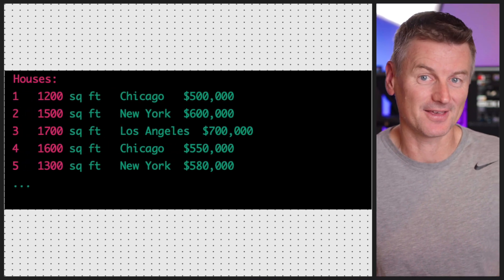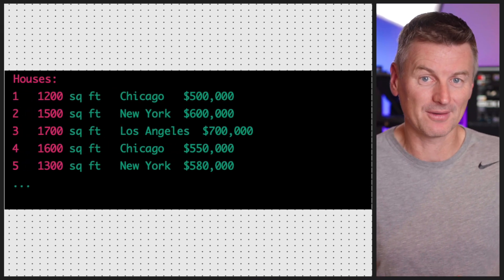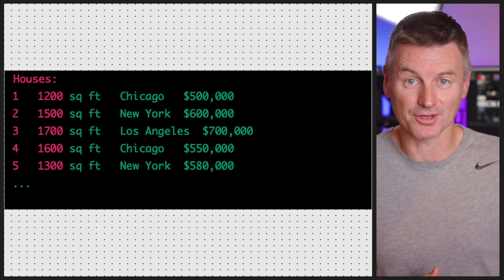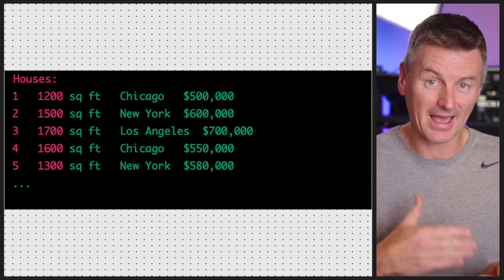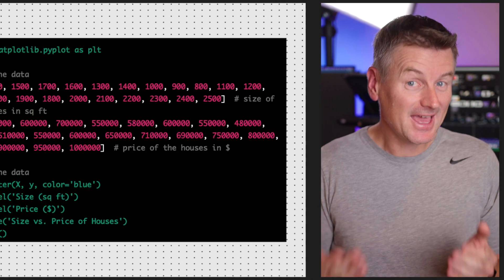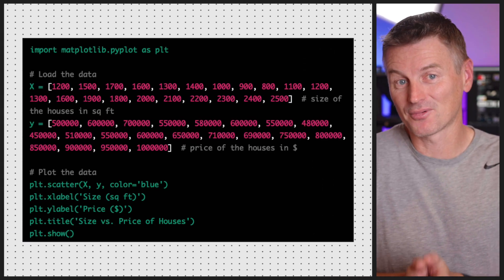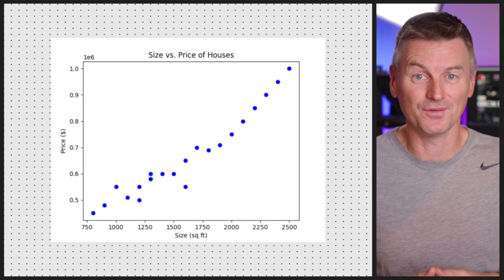Now, to see how this works in practice, let's consider the example of predicting the price of a house based on its size. Suppose we have a dataset of 100 houses and their sizes and prices. We want to use linear regression to model the relationship between the size of a house and its price, and use this model to predict the price of a new house. First, we'd plot the size and price of each house on a scatter plot to visualize the relationship between the two variables.